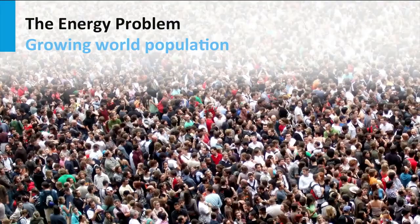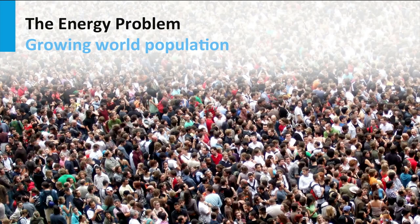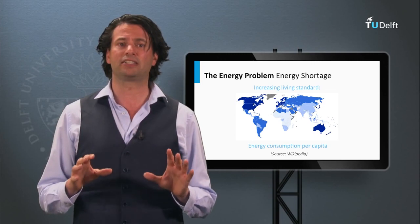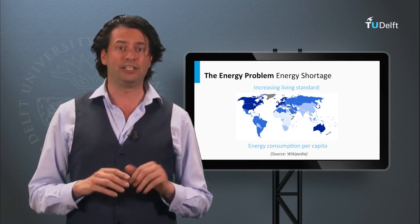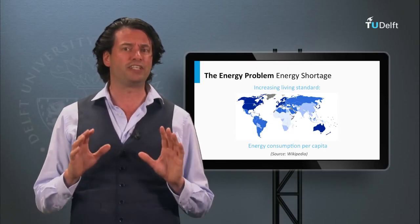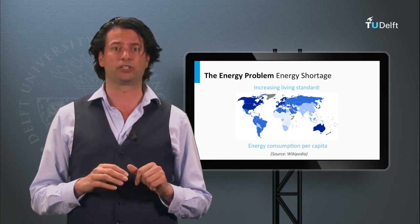Why do we have a problem? The first challenge humankind is facing is a supply-demand problem. The demand is constantly growing. The world population is still rapidly growing, and some studies predict a world population of 9 billion around 2040, in reference to the 7 billion people living on this planet today. All these people will need energy, which increases the global energy demand. In addition, the energy consumption per capita is linked to the living standard of a country. In 2010, in the US, around 230 kilowatt hours of energy per capita per day was used, whereas countries in Africa, like Nigeria, only used one-tenth of this energy, around 23 kilowatt hours per day per capita.